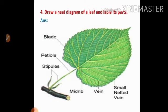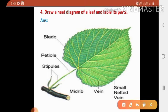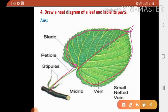Fourth question: draw a neat diagram of a leaf and label its parts. You draw the leaf very neatly and label its parts. Write spellings correctly. First one: leaf blade — B-L-A-D-E. Second one: petiole — P-E-T-I-O-L-E. Third one: stipules — S-T-I-P-U-L-E-S. Fourth one: midrib — M-I-D-R-I-B. Fifth one: vein — V-E-I-N. These are the parts of a leaf.